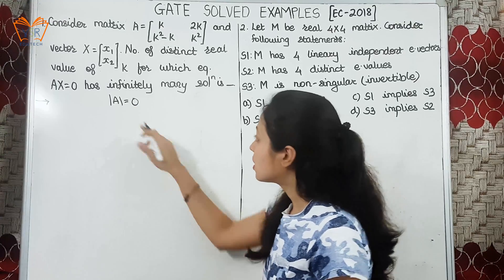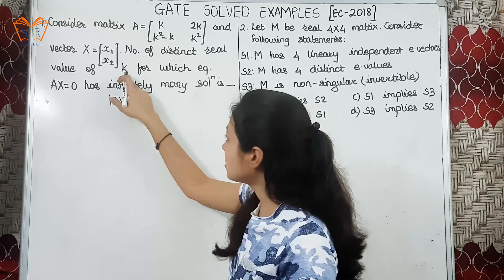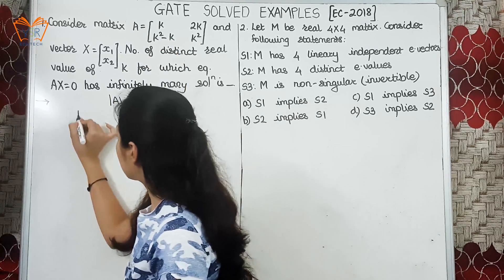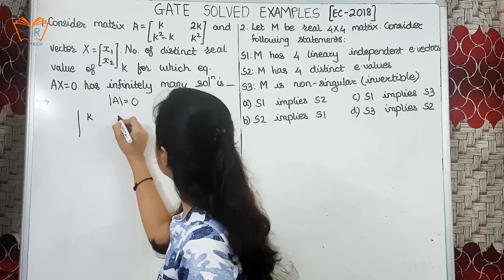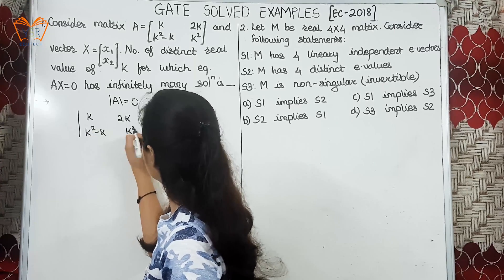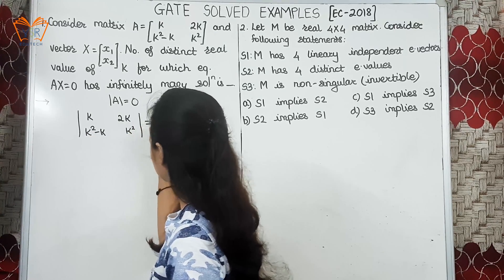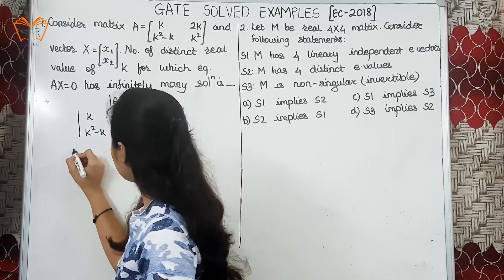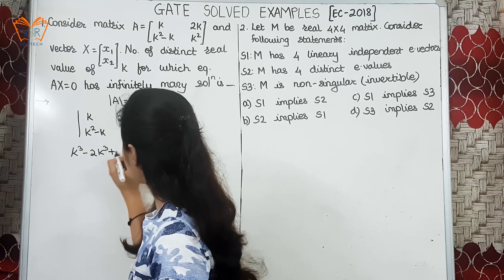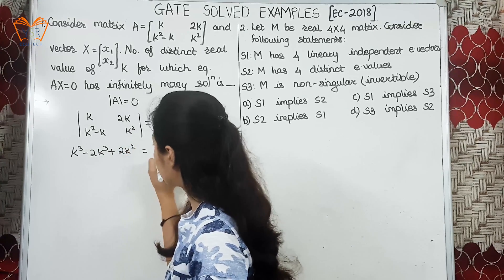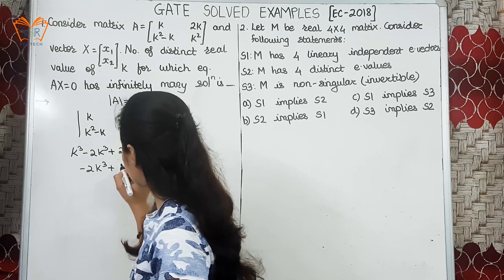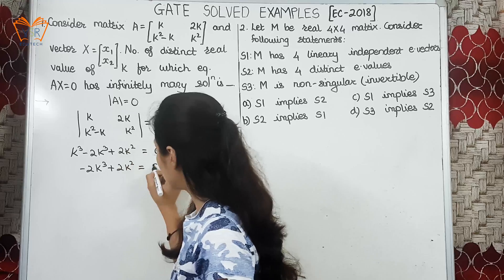So what we will do is we will simply find the determinant of given matrix and from that we will get the value of unknown k. Let us find out the determinant. Determinant is 0. So this will be k cube minus 2k cube plus 2k square is equal to 0. This is minus 2k cube plus 2k square is equal to 0.